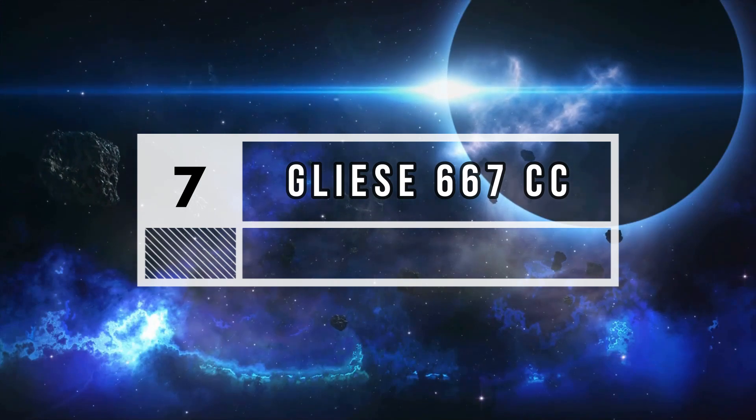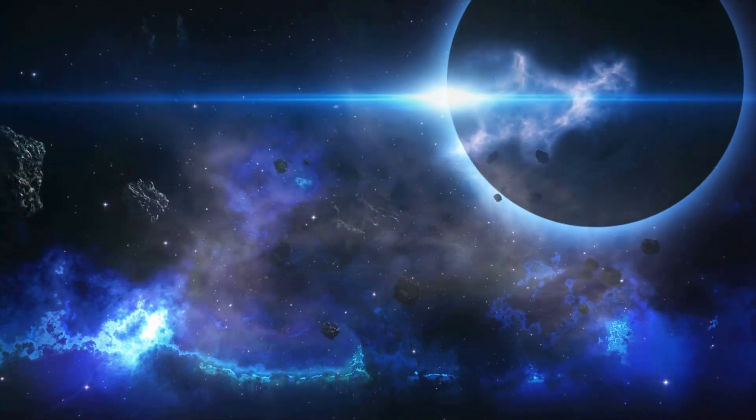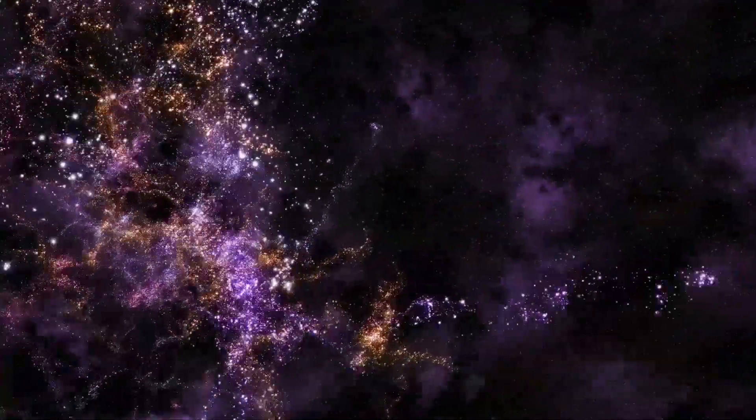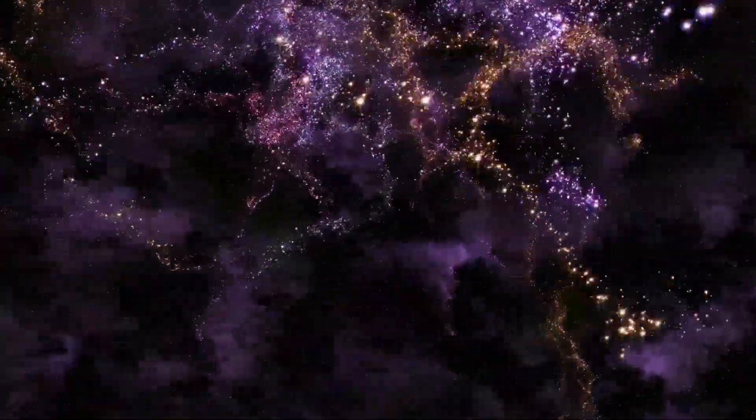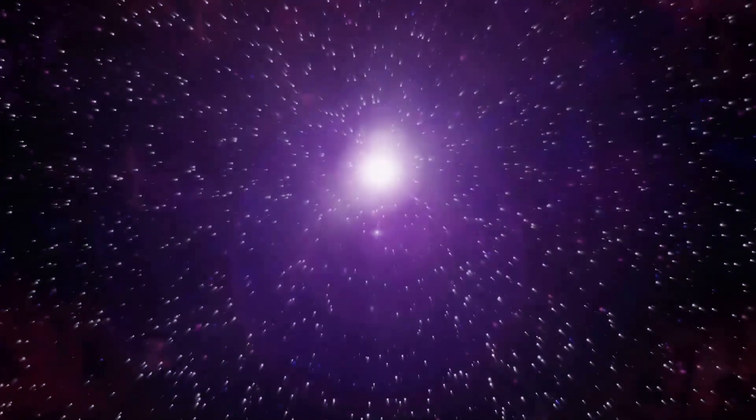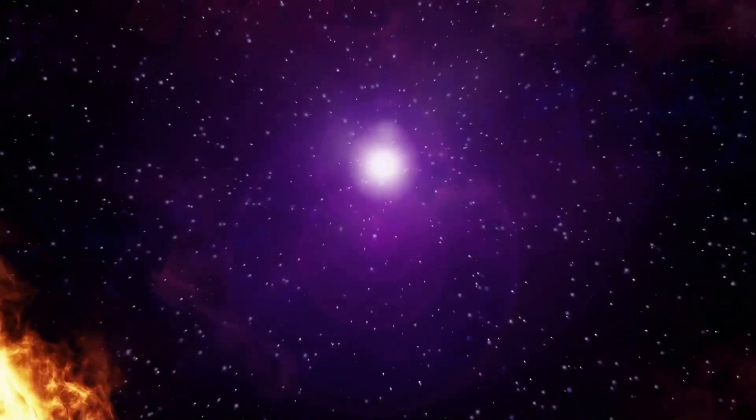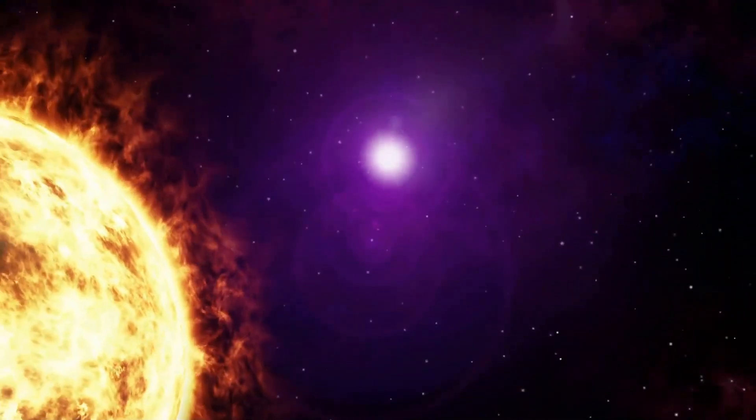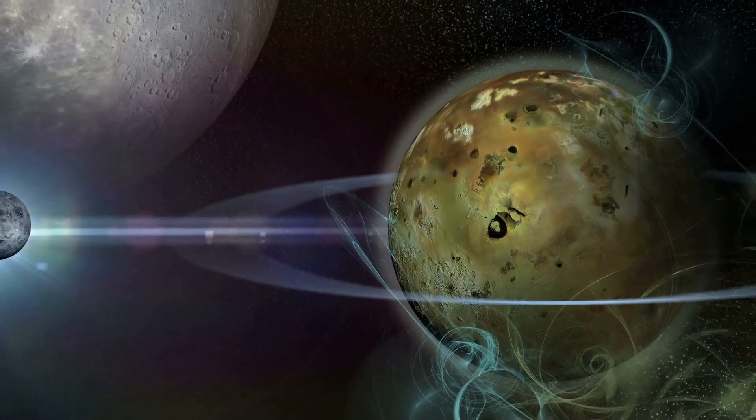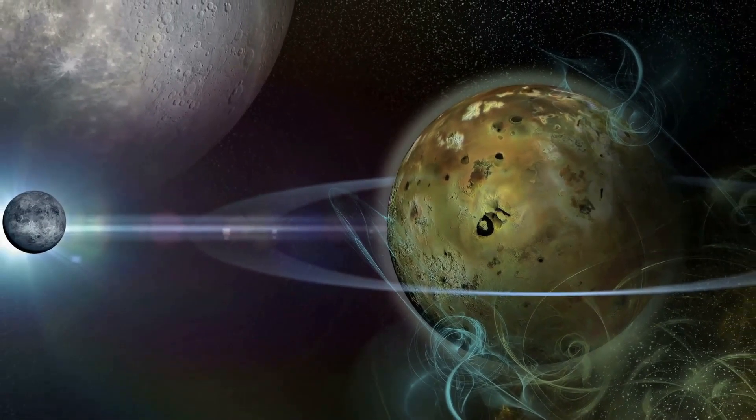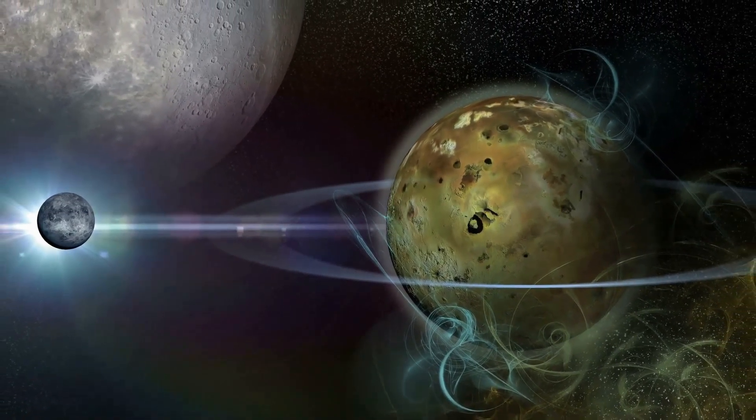Number 7: Gliese-667cc. It is found in the Scorpius constellation and is about 22 light years away. It orbits around GJ-667c, a red star, which is a part of the three-star system. Gliese-667cc is about 5 times larger than the Earth, having a 28-day year.